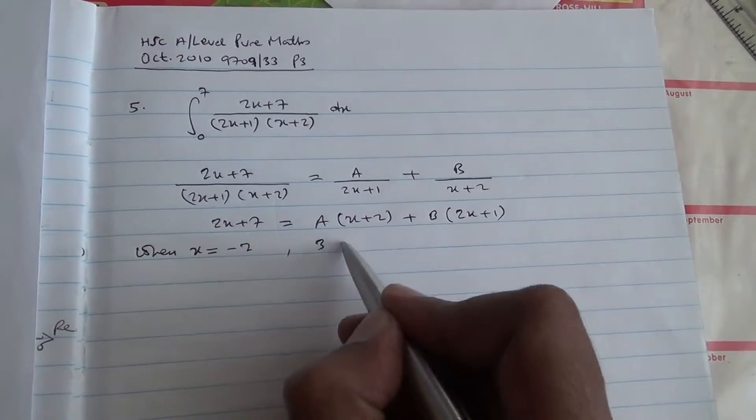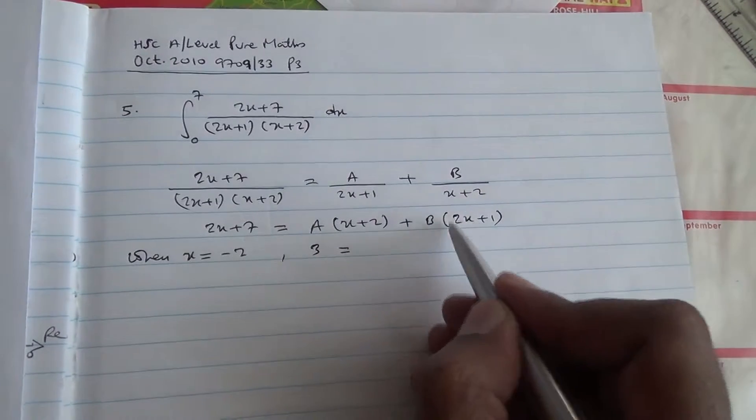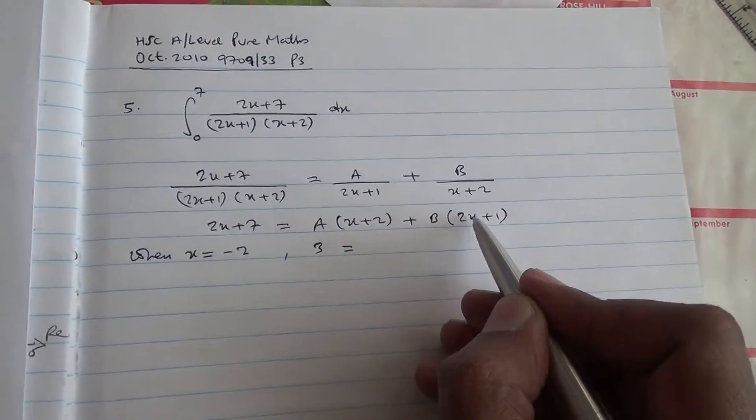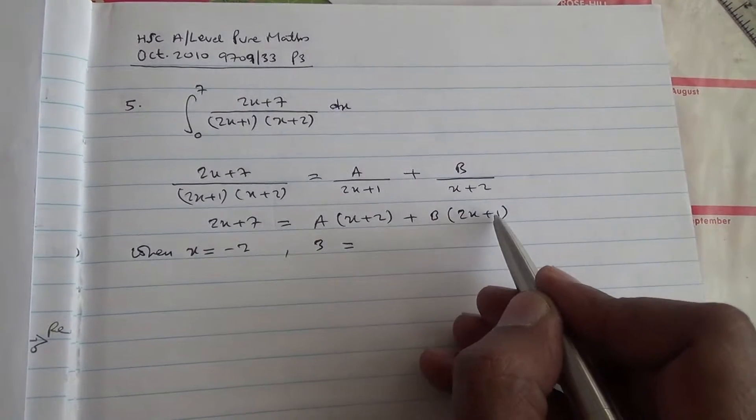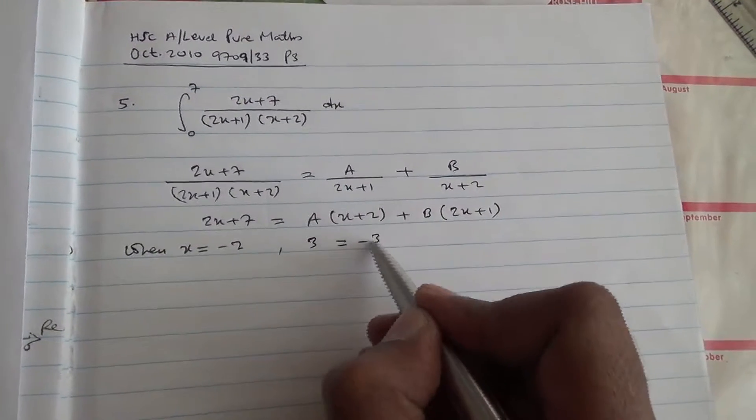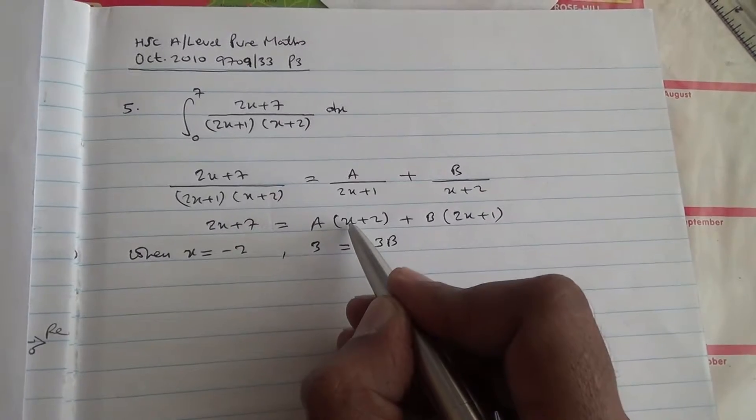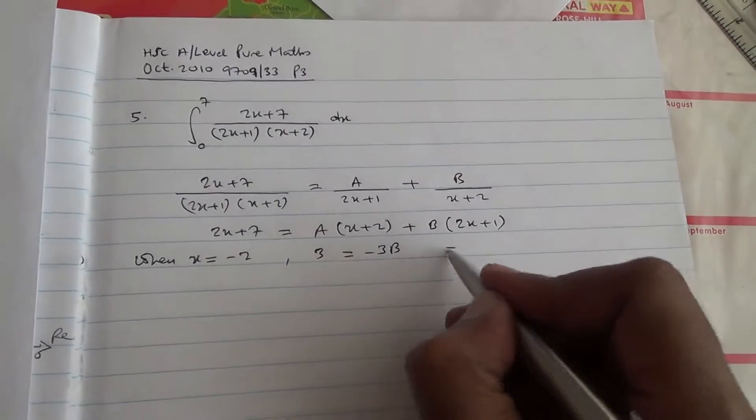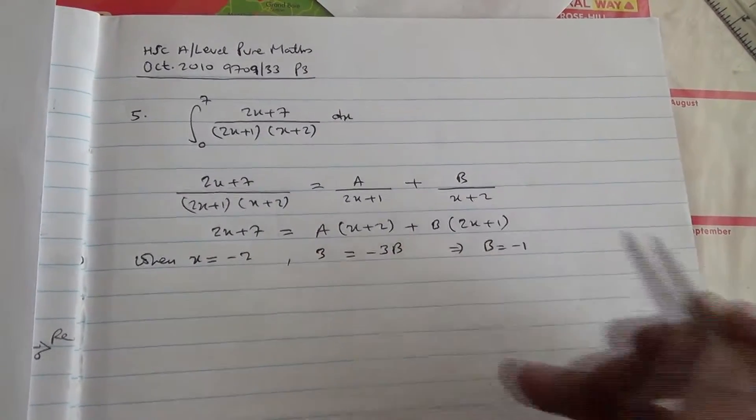Therefore I have 3 is equal to minus 2 times x, I mean x is minus 2, minus 2 times 2 is minus 4, minus 4 plus 1 is minus 3, we have minus 3b. If we put minus 2 here, it's going to cancel out because minus 2 plus 2 is equal to 0. Hence we have b is equal to minus 1.